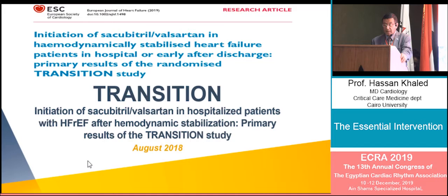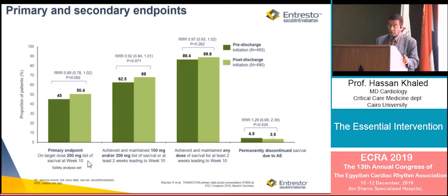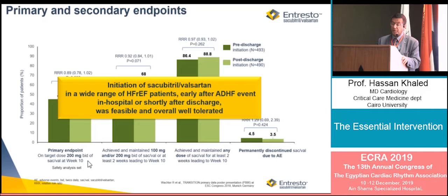The TRANSITION trial examined whether ARNI could be used in hemodynamically stable patients after acute decompensated heart failure, when initiated early in hospital or shortly after discharge. About 86% of patients were initiated in-hospital and 88% post-discharge. The dose used was 50 mg twice daily or 100 mg twice daily or 200 mg twice daily. Initiation of sacubitril/valsartan early after acute decompensated heart failure was found to be feasible and well tolerated.